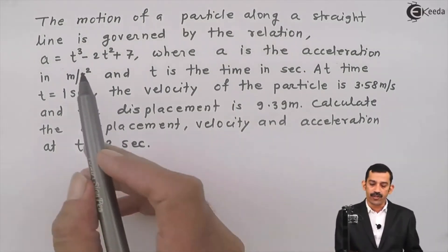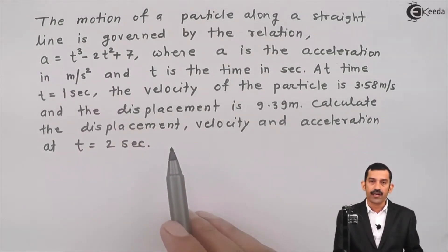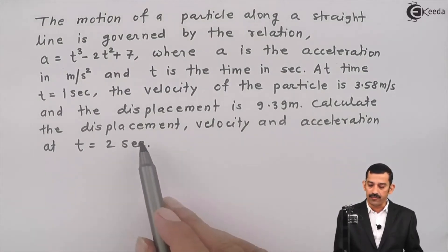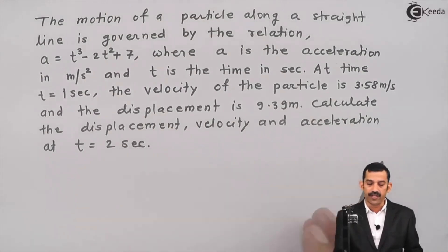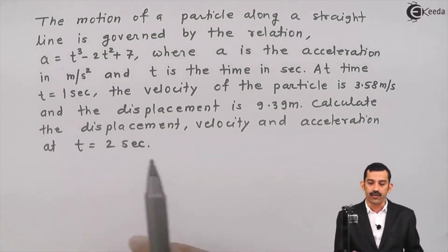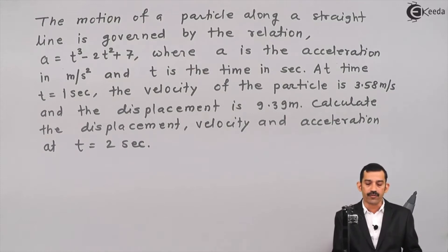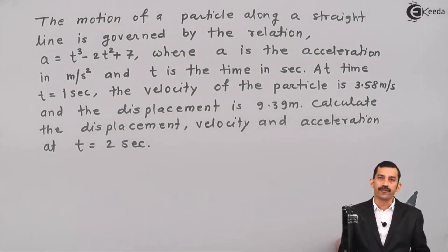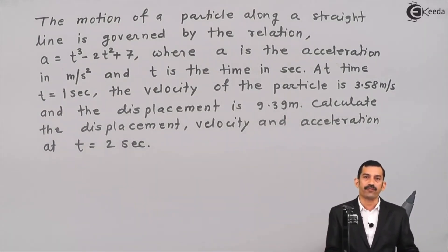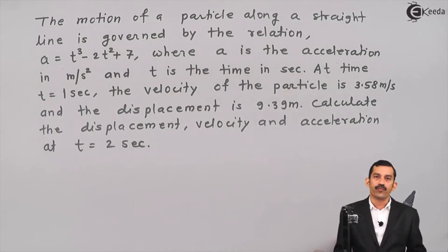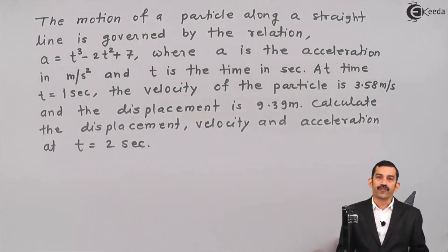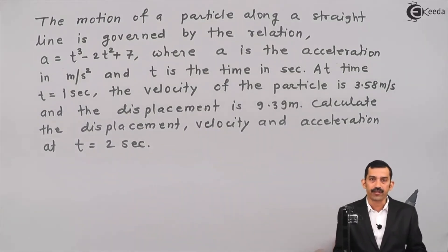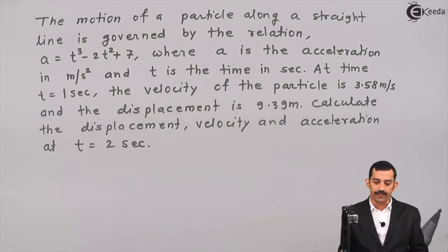The equation of acceleration is given, and what is asked is displacement, velocity, and acceleration. That means, from the equation of acceleration, we have to find the equation of velocity and the equation of position. This is possible using integration.